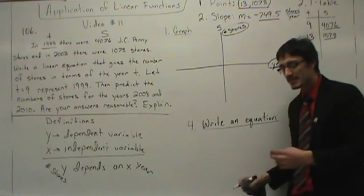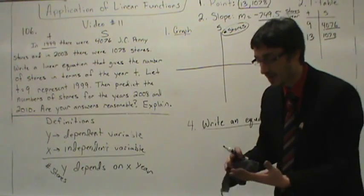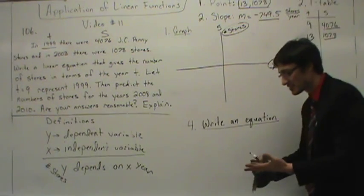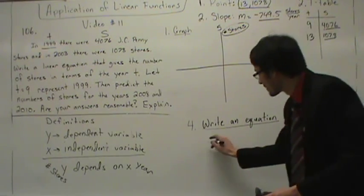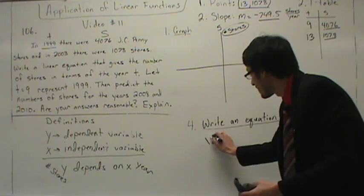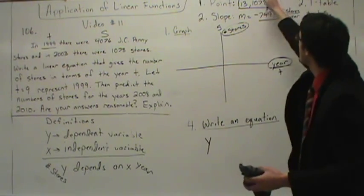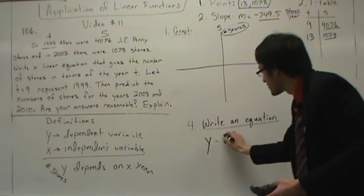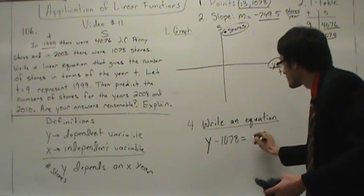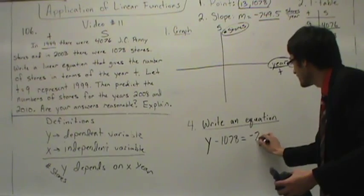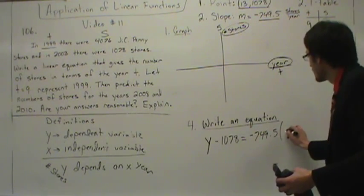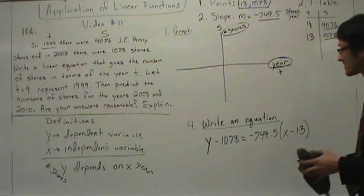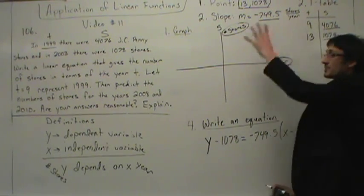An equation uses point and slope. What is the easiest equation to write? We have three forms: point-slope, slope-intercept, and standard. If you had to pick, point-slope is easiest. So we write: Y minus the Y-value of our point. Our Y value is 1,078, so: S minus 1,078 equals negative 749.5 times the quantity (T minus 13). You have successfully written the equation that models this situation.